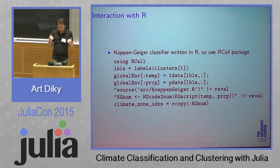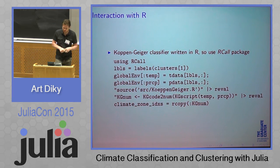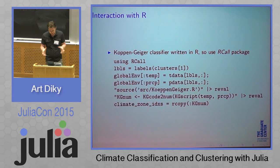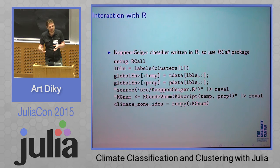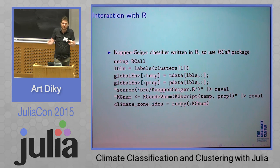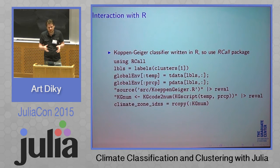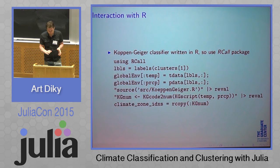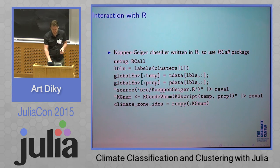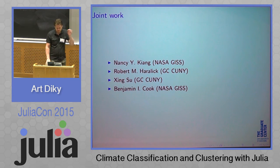We also have some parts written in R. It was really easy to integrate R into our research using RCall. Here's a small snippet: we have a climate classifier, and we grab the cluster, filter the data, and pass it to the R call routines. We end up with data perfectly partitioned using the climate zone classifier that was originally designed with the NASA team.